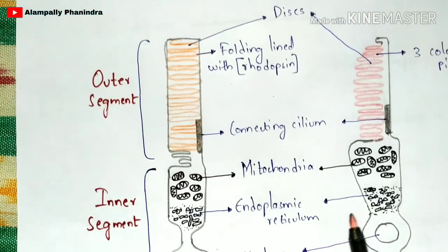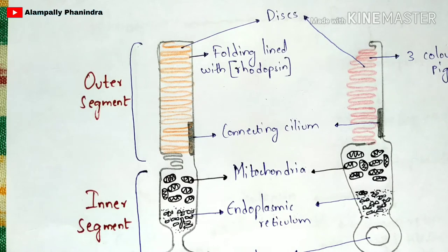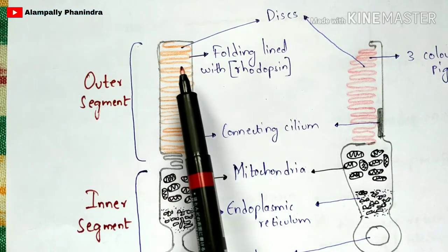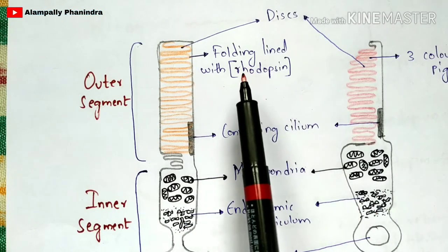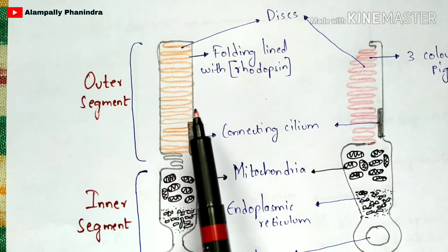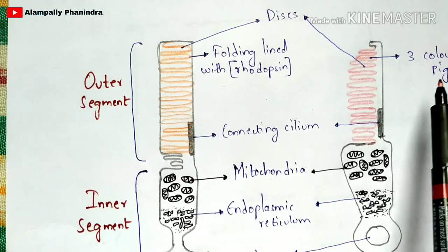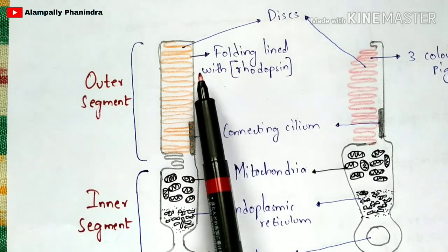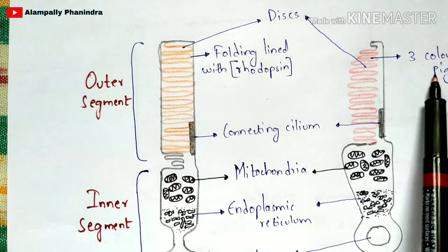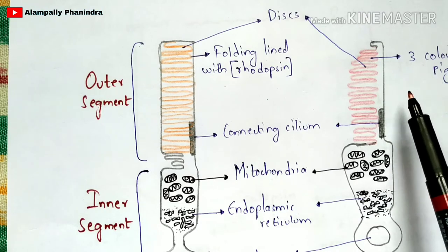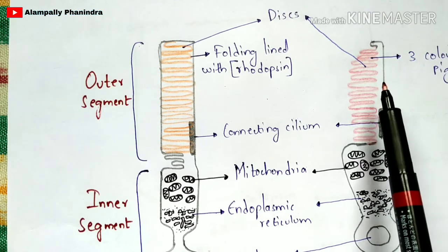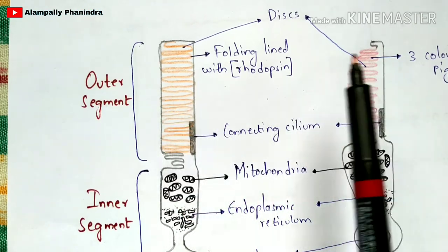Coming to the labeling of the rod and cone structures: the pigments of rods and cones — rhodopsin and the red, green, and blue color pigments — are present in the outer segment within folded structures. In the rods, the folding region in the outer segment contains the rhodopsin pigment. In the cones, the folding region contains three color pigments: phycoerythropsin (red), iodopsin (green), and cyanopsin (blue). The connection between the outer and inner segment is called the connecting cilium.